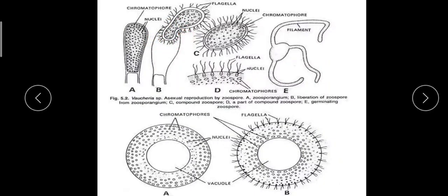The terminal wall of the zoosporangium gelatinizes and dissolves, and the mature multi-nucleate multi-flagellate zoospore escapes through this opening. The released zoospore swims through water and settles. Upon settling, it withdraws its flagella, secretes a cellulosic wall around itself, and the nuclei and chromatophores revert to their normal positions — nuclei to the inner zone and chromatophores to the outer zone.